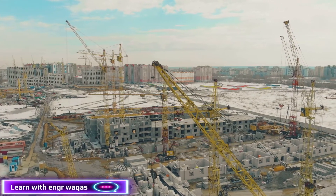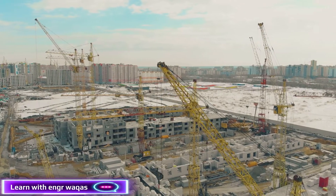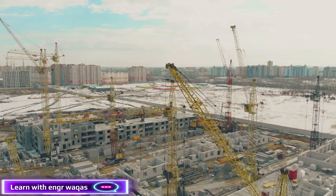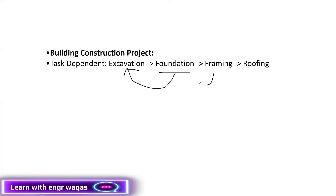There are different kinds of activity types. Let's say I'll give you an example in building construction projects. There is task dependent activity. Task dependent activity is going to depend on the logic of your project. For example, foundation depends on excavation, framing depends on foundation, and roofing depends on framing. That is task dependent — the activity which is going to depend on another task, with predecessor and successor logic.